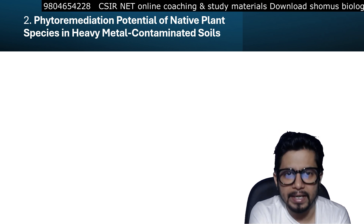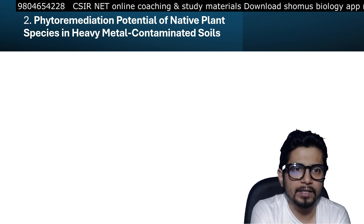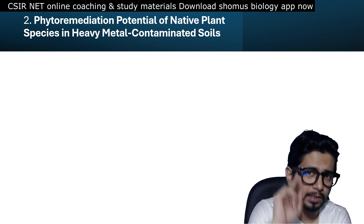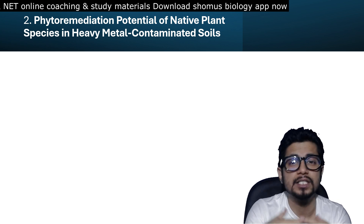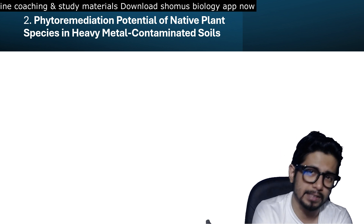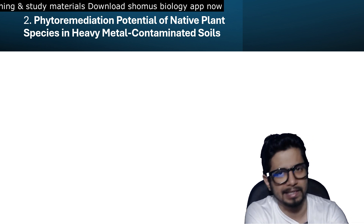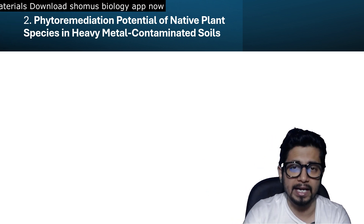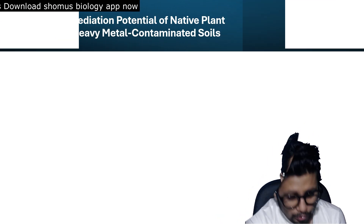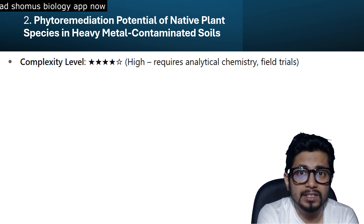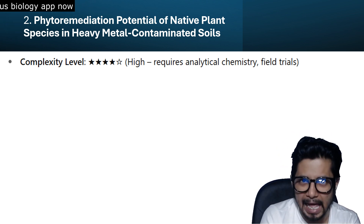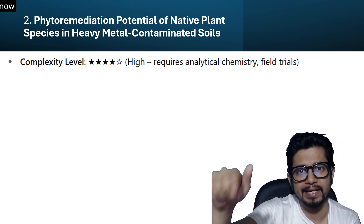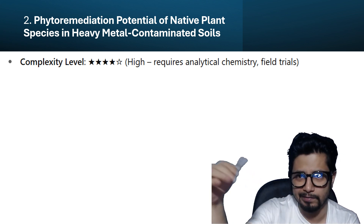The second topic is phytoremediation potential of native plant species in heavy metal concentrated soil. We are polluting water and soil heavily. Soil is filled with heavy metals — lead from battery industries, mercury, cadmium — which are very toxic for plants. The complexity level is high; it requires analytical chemistry and field trials. Most researchers prefer lab environments, but for this kind of work you need to collect data in the field.